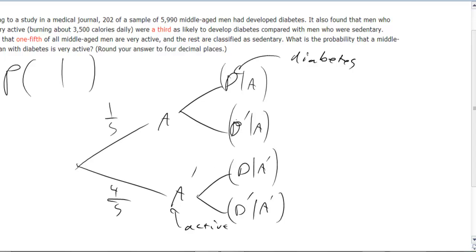So it's asking what is the probability that a middle-aged man with diabetes is very active? They're telling you they've got diabetes, what's the likelihood that he's active?